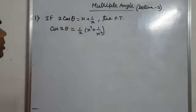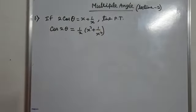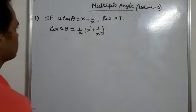If 2 cos theta equals x plus 1 by x, then prove that cos 2 theta equals half into x square plus 1 by x square.